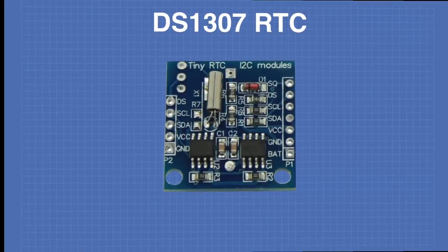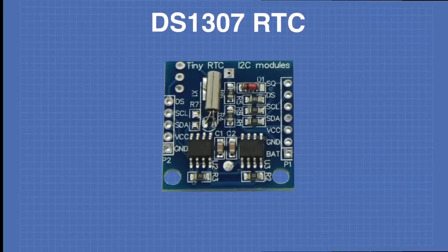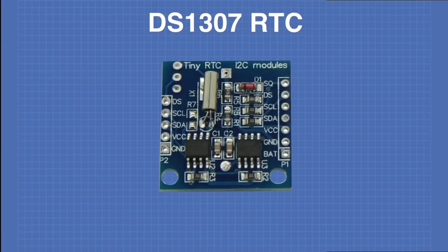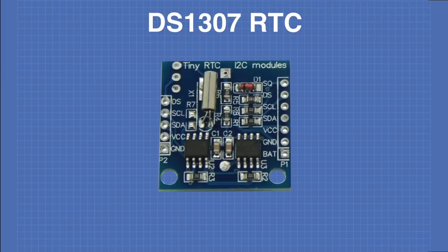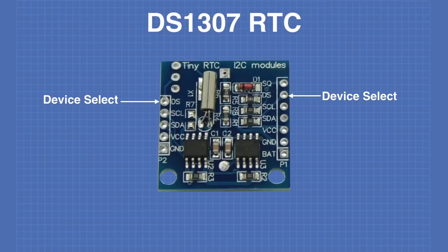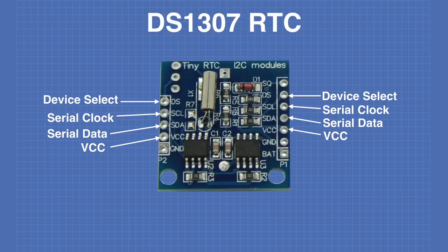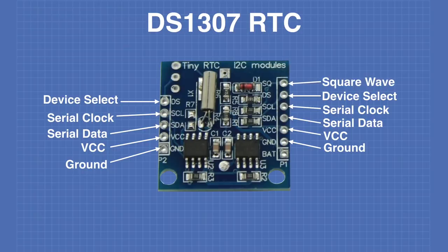Here are the pinouts of the TinyRTC, one of the most popular DS1307-based modules. The pinouts are repeated on both sides of the device. There is the device select to enable or disable the device, the I2C serial clock, the I2C serial data, a VCC connection for the power supply, a ground connection, a square wave output, and an output from the backup battery.